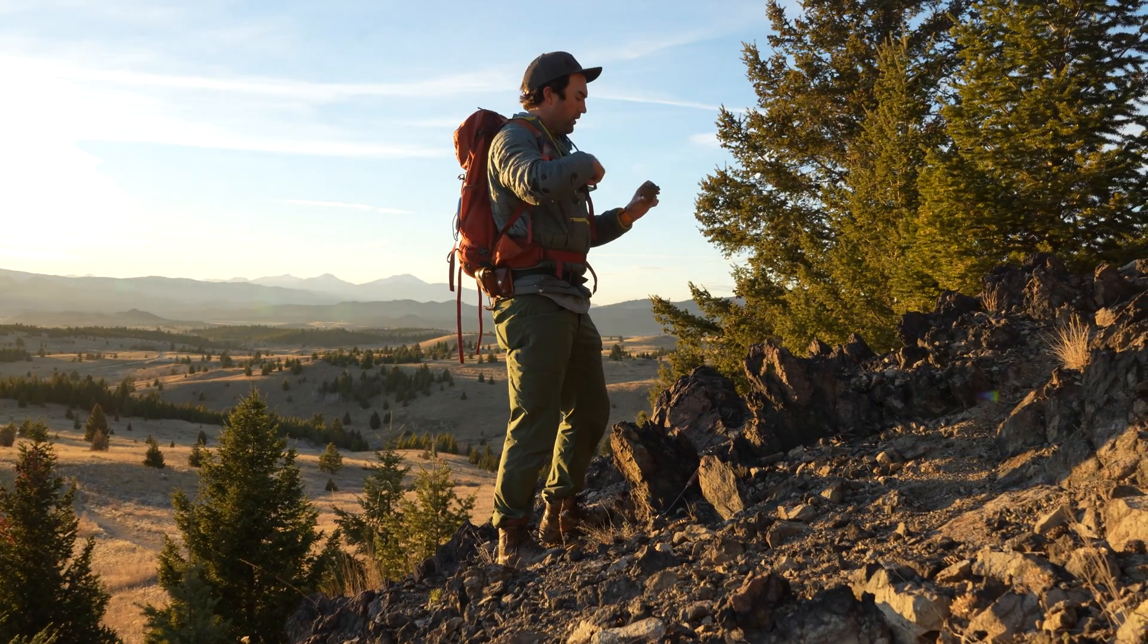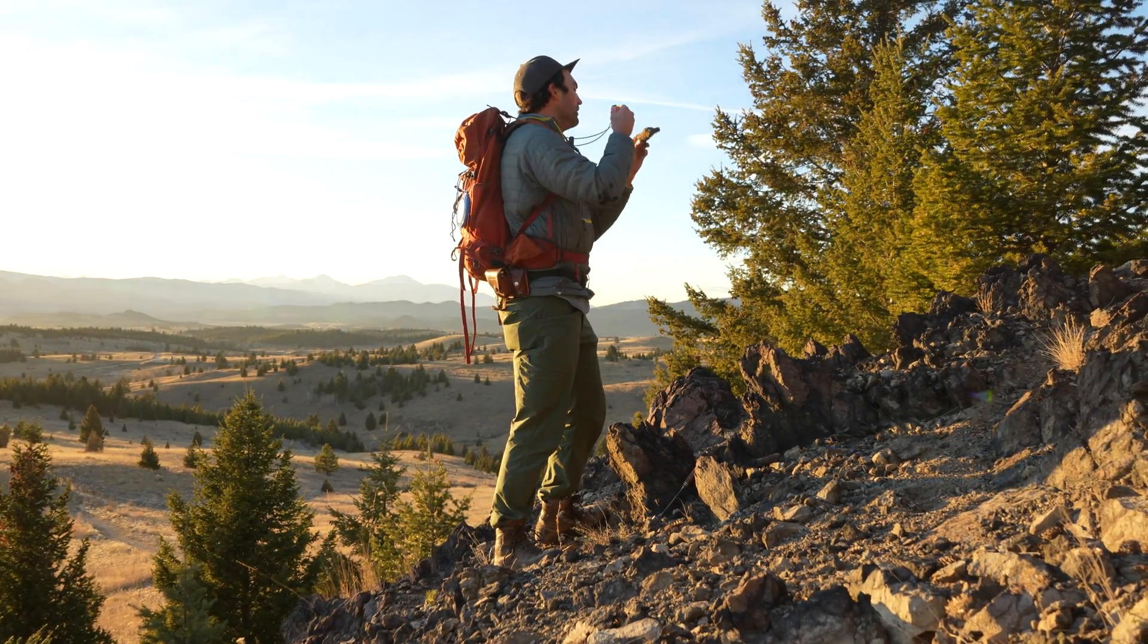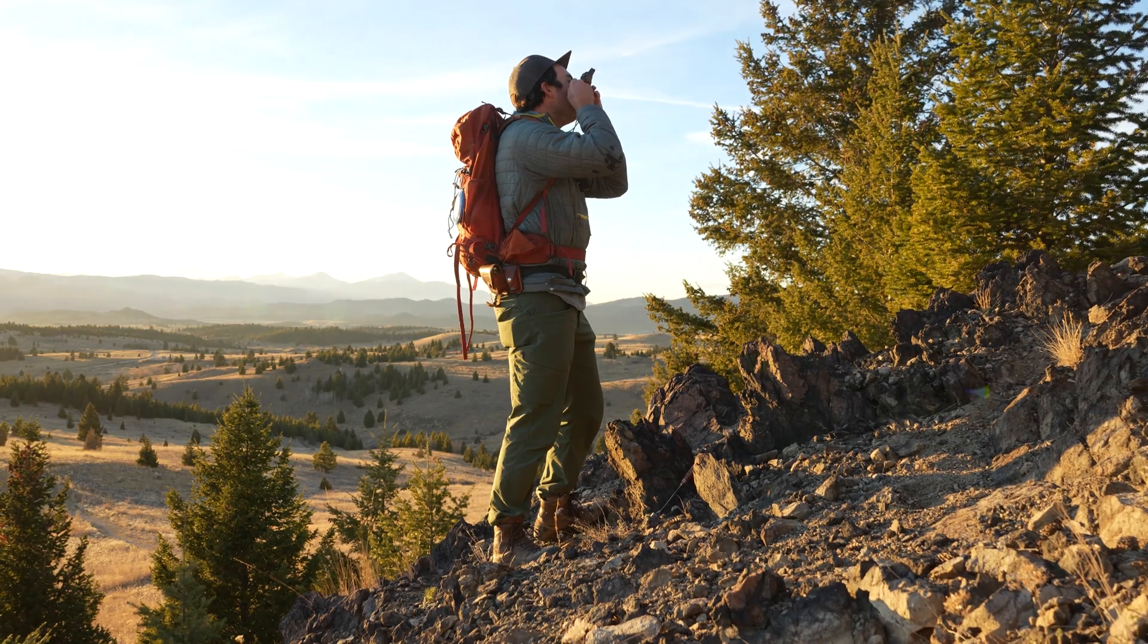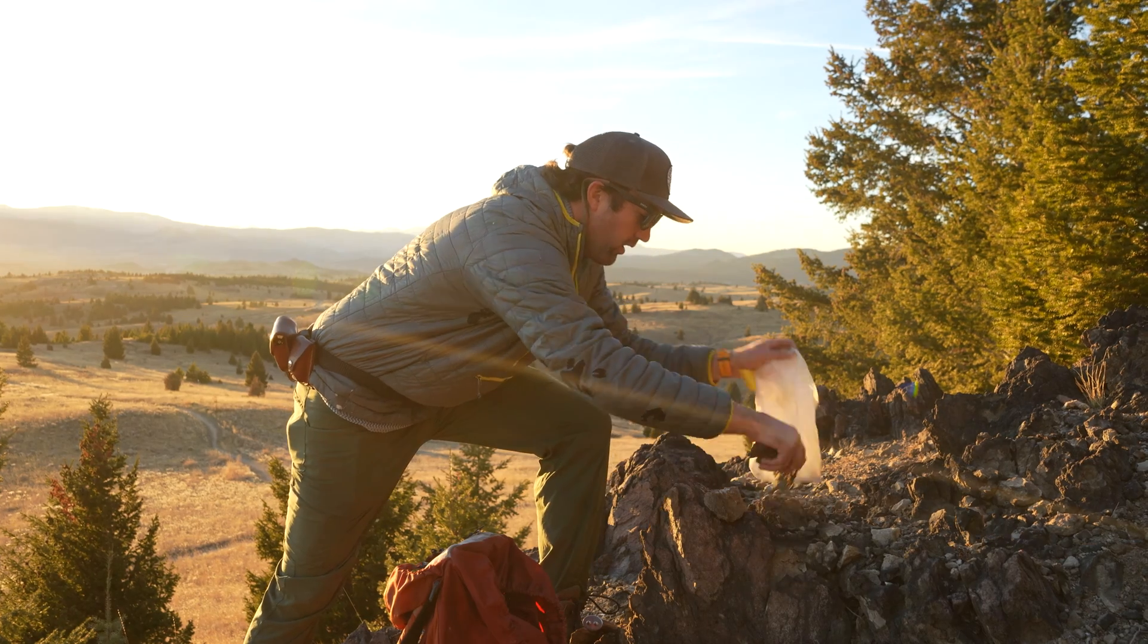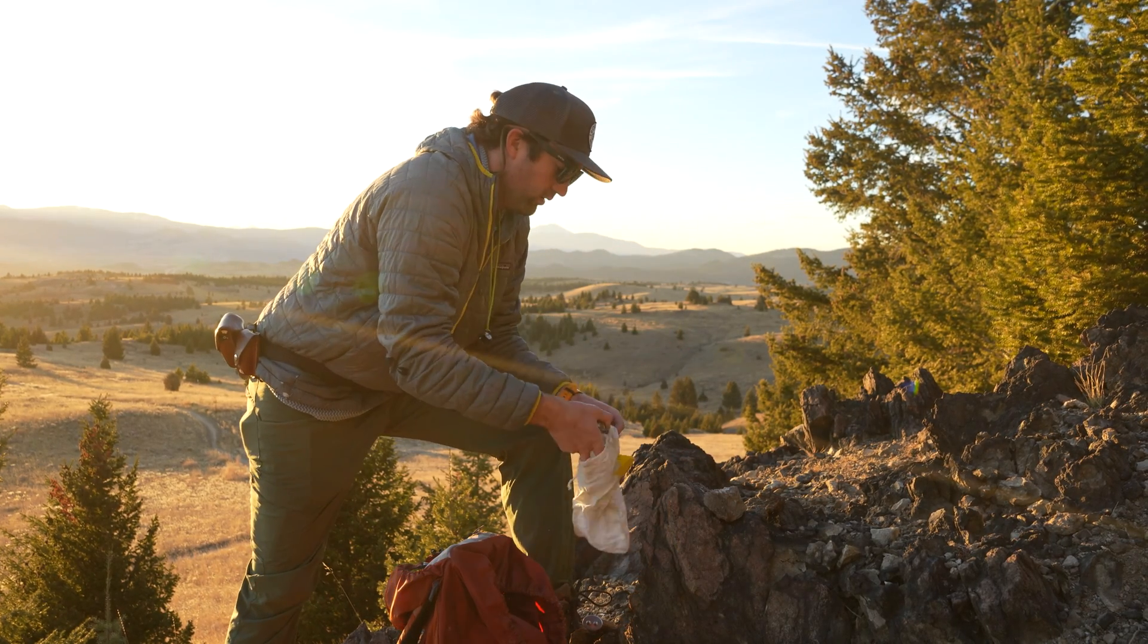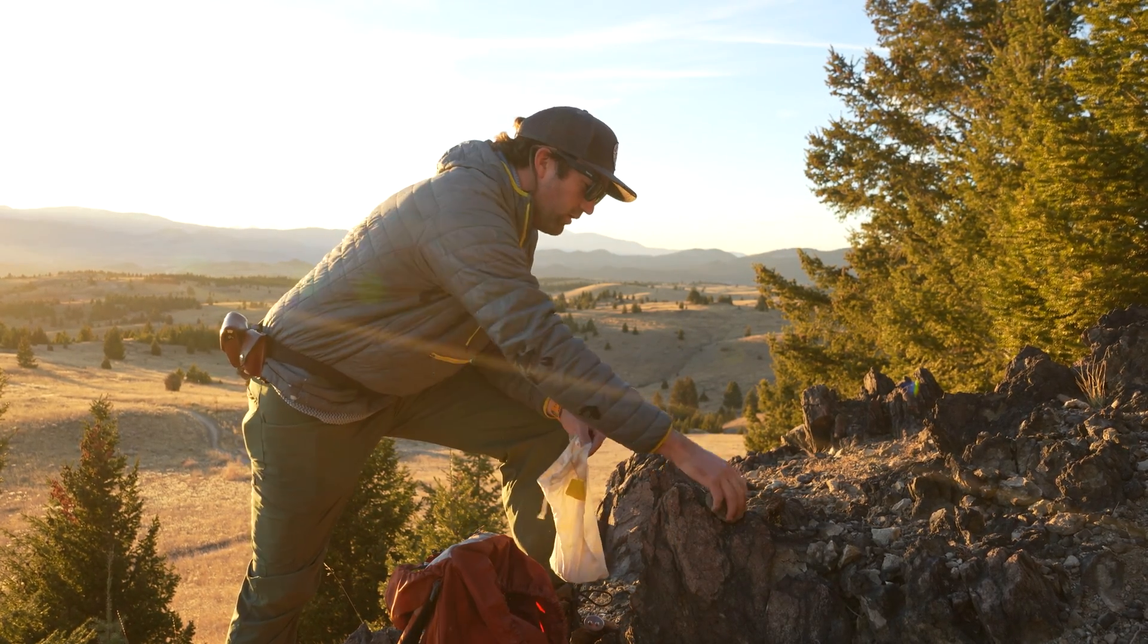The first step in the process is carefully collecting a sample and marking its location on our map via GPS. Because zircon is so small and hard to find, samples for age dating tend to be very large, often weighing up to 10 pounds each. This can make for a very heavy pack at the end of a day of mapping.